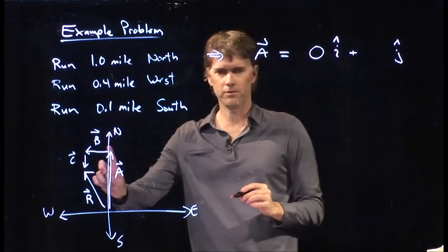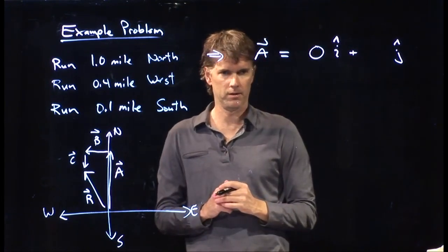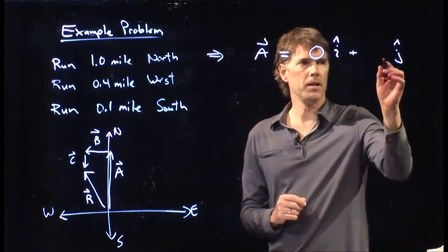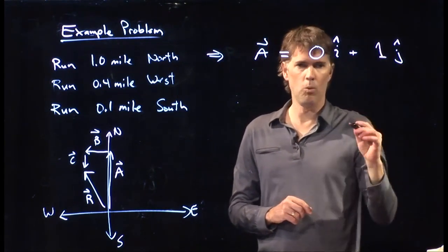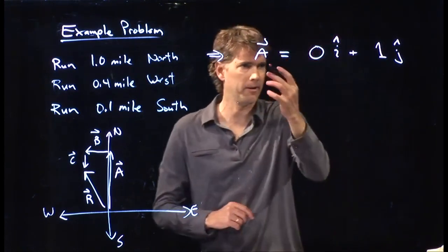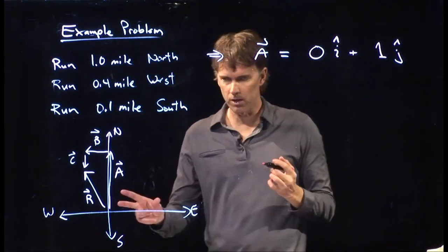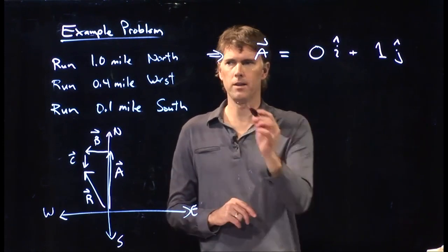Right? This first one doesn't go any in the east. What do I need to put on the second term? One. Right? One mile. So this is how I write that first vector. It's 0 i hat plus 1 j hat.